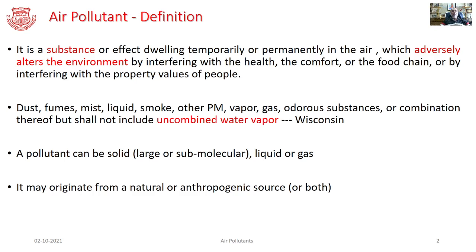An air pollutant is a substance or an effect which could be dwelling temporarily or permanently in the atmosphere which adversely alters the environment. This adverse alteration could be reflected through interference with health and comfort, effects on the food chain, or loss of property value. This substance could be present in various forms like dust, fumes, mist, etc. It is specifically noted that uncombined water vapor is not included in the list of air pollutants.